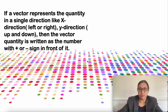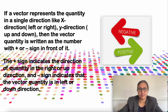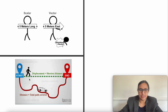If a vector represents a quantity in a single direction, like the x or y direction, the quantity is written as a number with a positive or negative sign in front of it — a positive vector or a negative vector. The positive sign indicates the direction is to the right or upward, while the negative sign indicates the direction is to the left or downward. For example: scalar quantity — '5 meter long'; vector quantity — '5 meter east'. Displacement is a vector quantity, but distance is a scalar quantity.